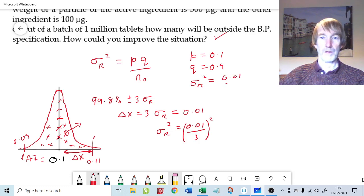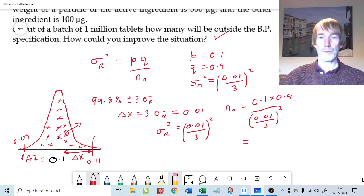That is the value we can use for our variance in Lacey's equation. If we do that, then N₀ is going to be equal to P times Q all divided by 0.01 over 3 squared, where P and Q are 0.1 and 0.9. That gives us a number of particles which is equal to 8,100 particles.